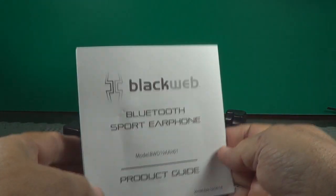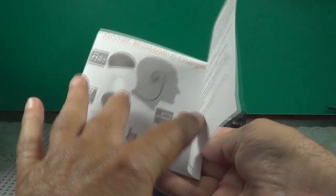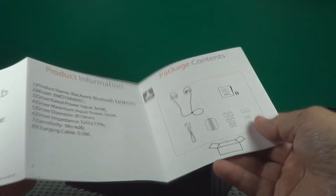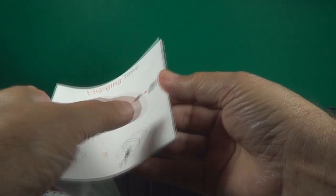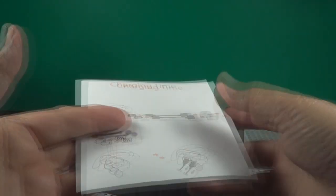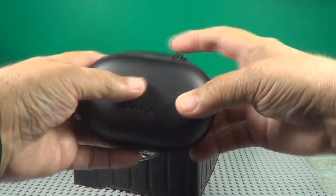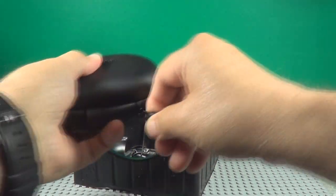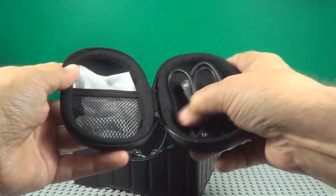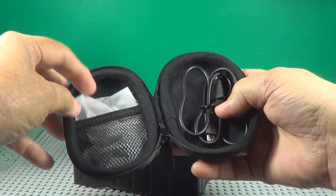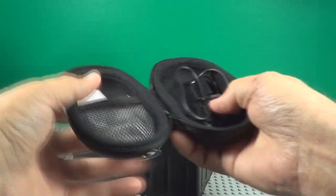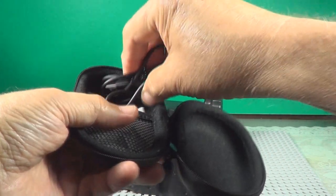Here's your instruction manual, Bluetooth Sport Earphones. There's a nice little carrying case for it. There's your charging cable. There's some extra ear covers for your earphones.